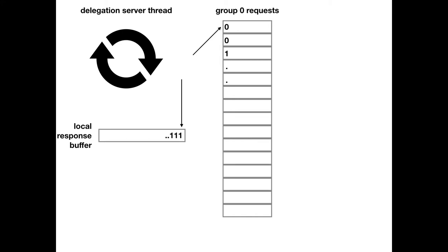The server runs through all requests, checks what the toggle bit used to be, and if it's different, runs that function and puts a response in the local response buffer — not yet invalidating the client's previous response. We fill the local response buffer for all requests. Once we've done all those requests — say for 15 clients — it's time to copy our local responses over to the global response buffer that the clients are spinning on. We do it this way because writing directly to the global response buffer would cause it to keep bouncing around due to clients spinning on it.